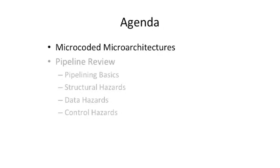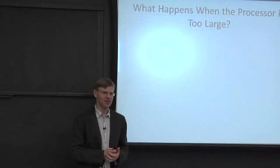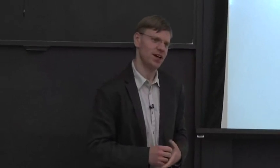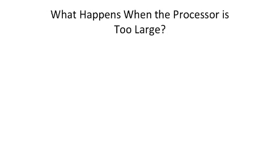Let's start talking about microcoded microarchitectures. One big problem that arose when processors were first being designed was that you couldn't fit a lot of the processor in a room, let alone on a chip. The question becomes: what happens when the processor is just too large to fit in a room or a chip? If you're building processors out of vacuum tubes, switches, or electromechanical relays, you have to think hard about how to cut down the size.